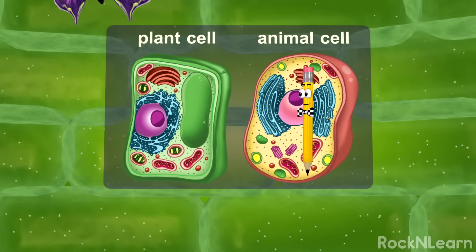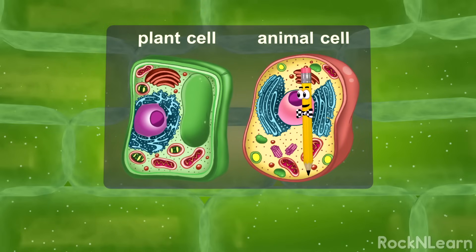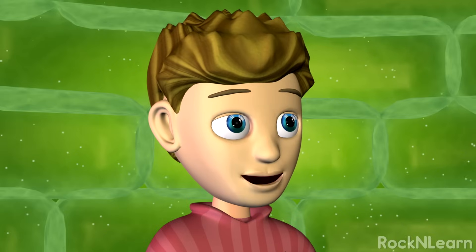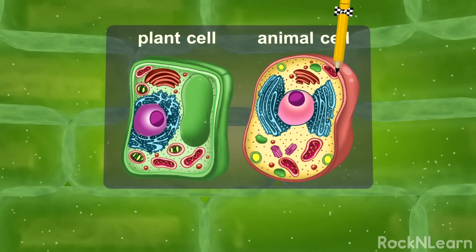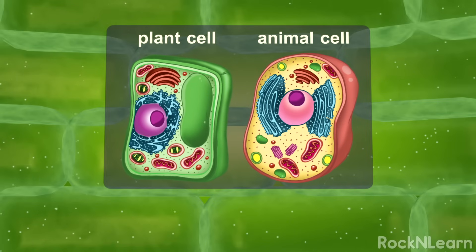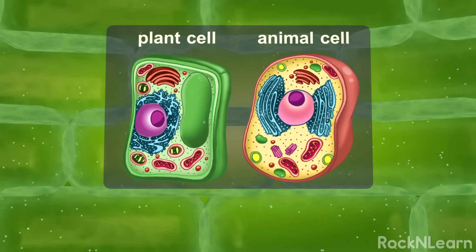Do you remember what the plants have that's green and helps them with photosynthesis? Sure I do, Marco. It's chlorophyll. Smart boy! Chlorophyll is stored in the organelles of the plant cells that are called chloroplasts.